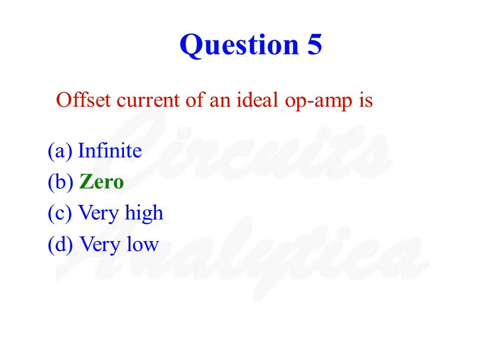The offset current of an ideal op-amp is 0. So the correct answer is option number 2.